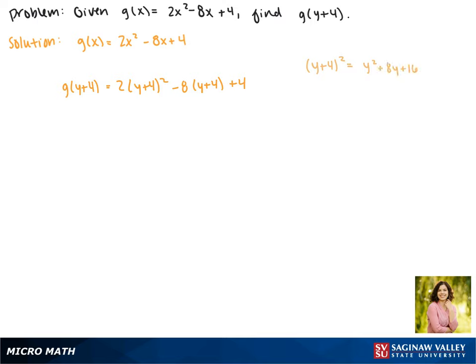So we'll plug that into our equation. This gives us g(y+4) = 2(y² + 8y + 16) - 8(y+4) + 4.